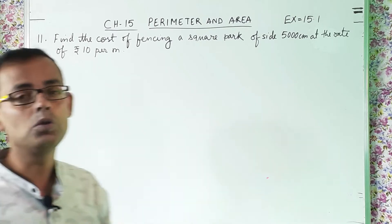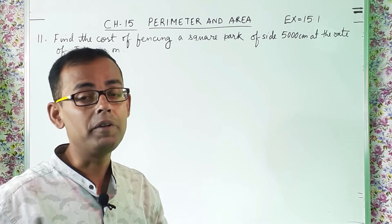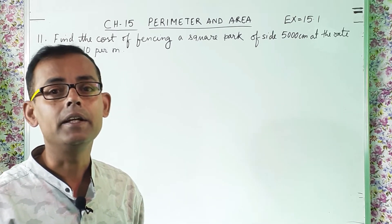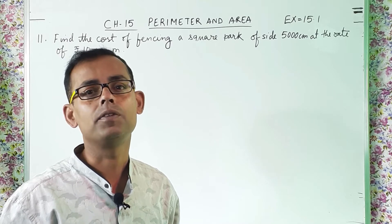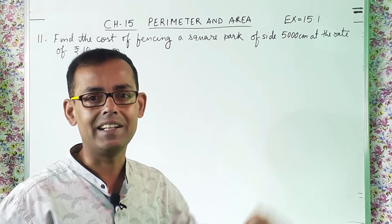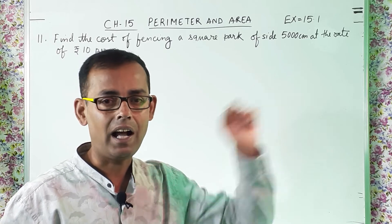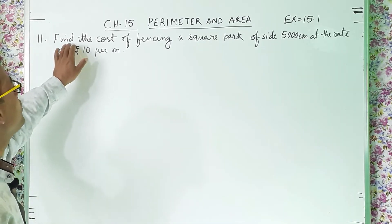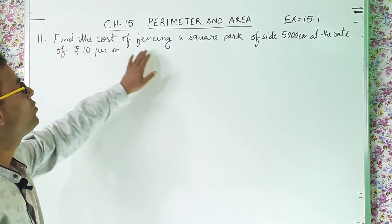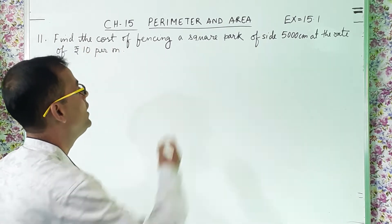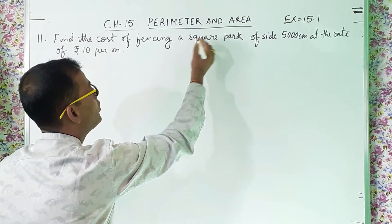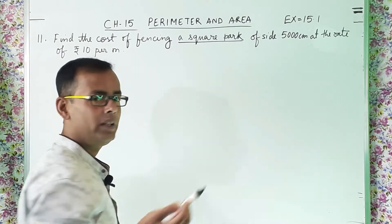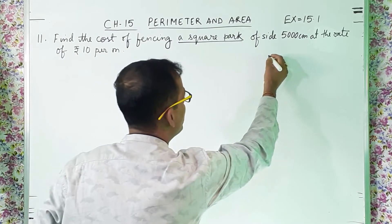Those who have not watched the previous videos where we solved question number 1 to question number 10, you can watch it — I have shared the link in the description below as well as in the I button. Now let us start the sum. What it is telling: find the cost of fencing a square park. So they are telling you have to find out the cost of fencing a square park.